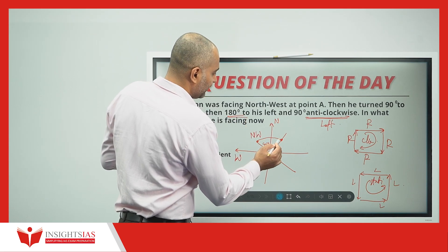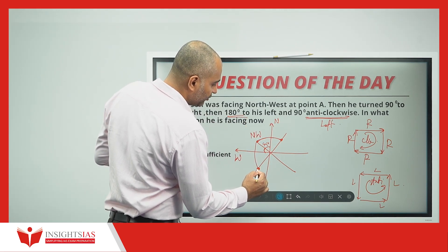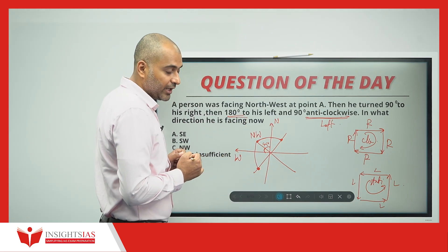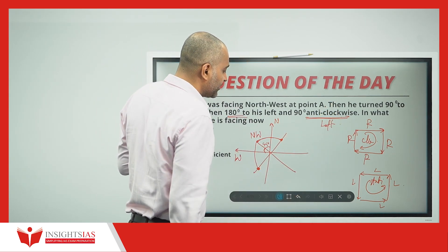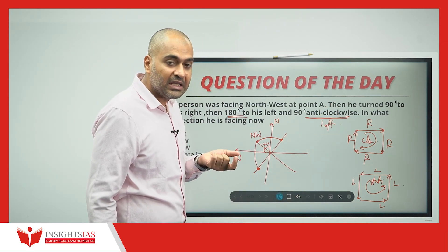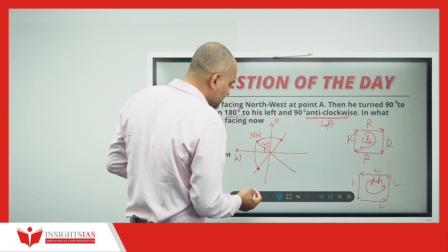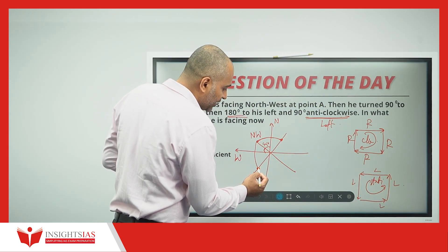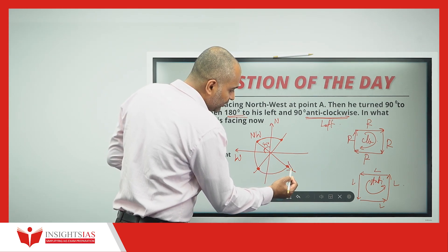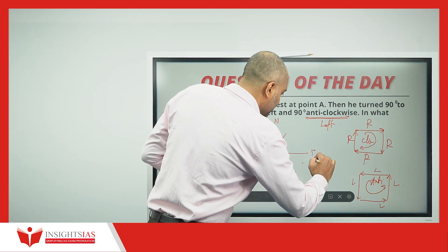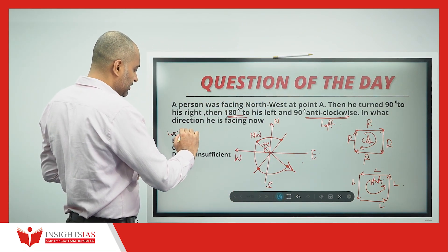Then he turned 180 degrees to his left — 180 degrees means 90 plus 90 — this is where he is located now. And again, 90 degrees anticlockwise, which means anticlockwise is left. 90 degrees anticlockwise means he is travelling in the same anticlockwise direction, and 90 degrees brings him to this point. This direction is between east and south, which is southeast.